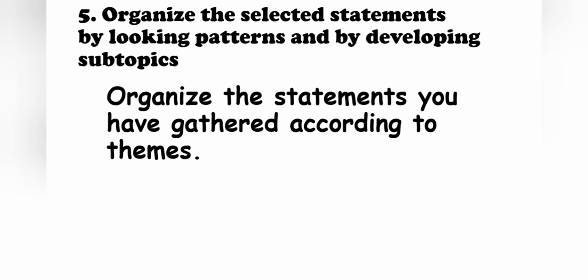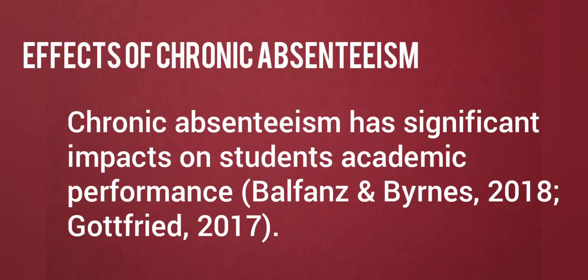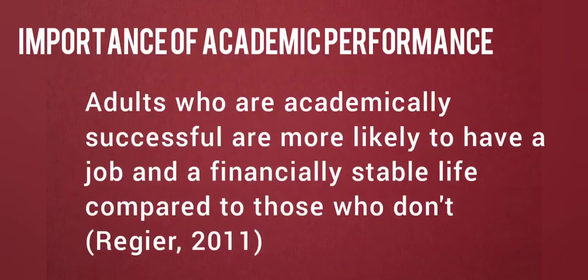Step 5: Organize the selected statements by looking for patterns and by developing sub-topics. Once you are done jotting down information from your related articles, you have to organize those statements according to their themes. The first statement and others have been categorized into the effects of chronic absenteeism, because all of them are about the effects of chronic absenteeism. Meanwhile, the second statement and others have been categorized into the importance of academic performance, because all of them talk about how important academic performance is.